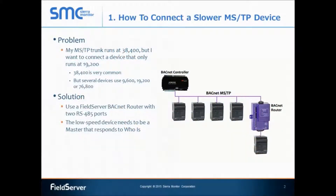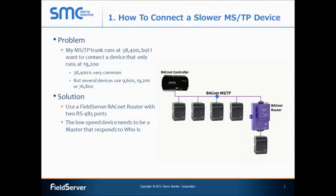Use case number one: how to connect a slower MSTP device. BACnet MSTP has the following baud rates available: 9600, 19200, 38400, and 76800. Even though most BACnet MSTP devices run at 38400 baud, integrators often have to connect devices that run at slower speeds such as 9600 or 19200. As a facilities manager, I have a BACnet MSTP device that does not have the baud rate I want to run my BACnet MSTP network at, and I can't find a substitute product.